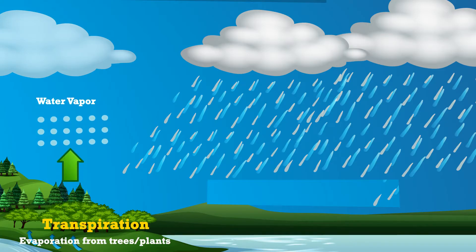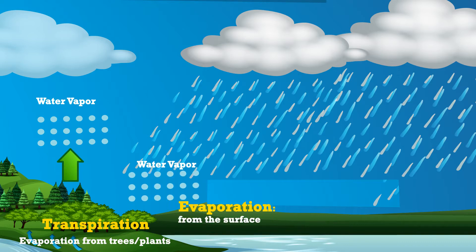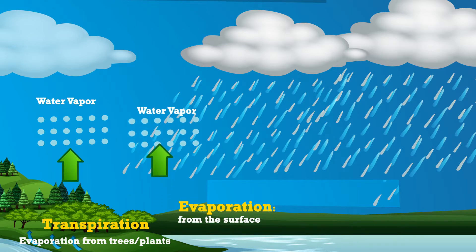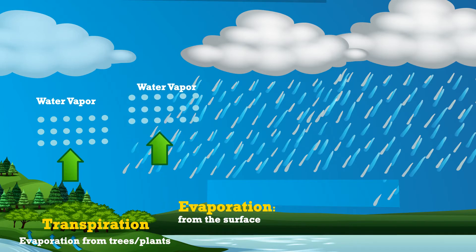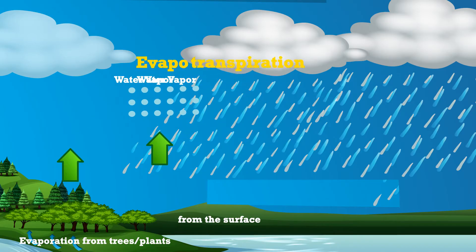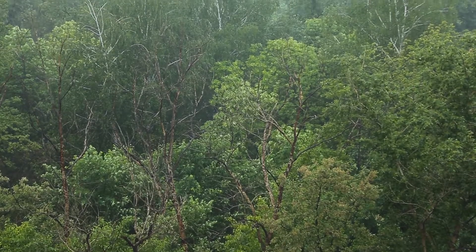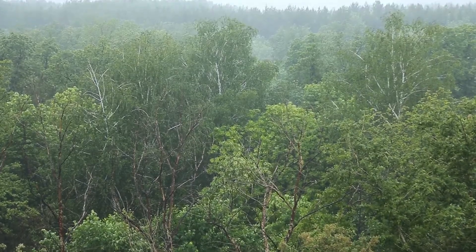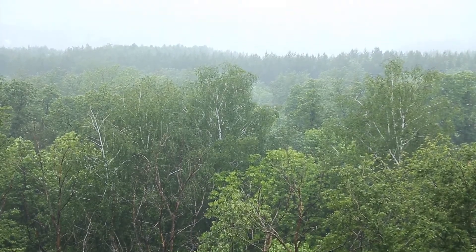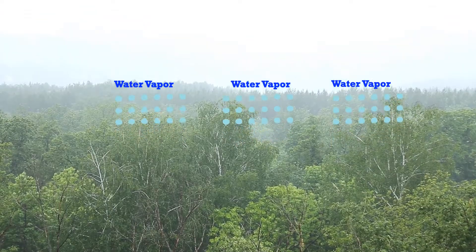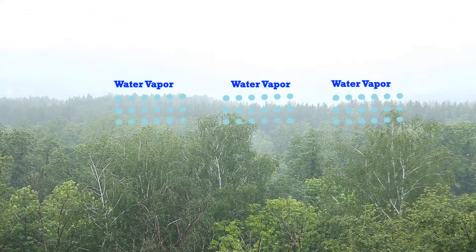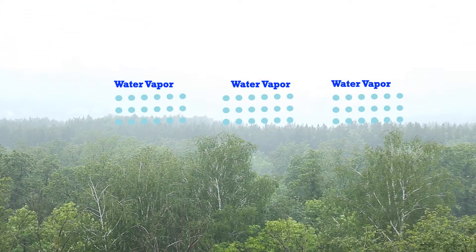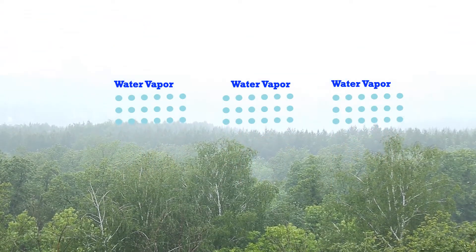This is called transpiration. Along with evaporation from the surface and soil, the excess water vapour combines together forming evapotranspiration. Areas like rainforests with high amounts of foliage and trees produce more water vapour into the atmosphere, causing the precipitation process to speed up.